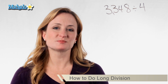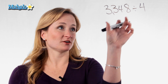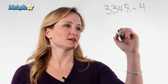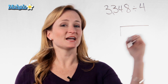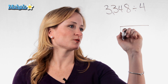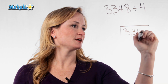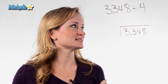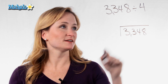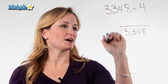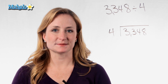The first step is making sure you set it up correctly. Your first number is what actually goes inside your long division sign. So we're going to put 3,348 on the inside, which is actually the dividend. And the divisor, 4, goes on the outside.